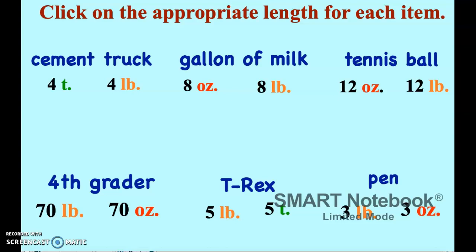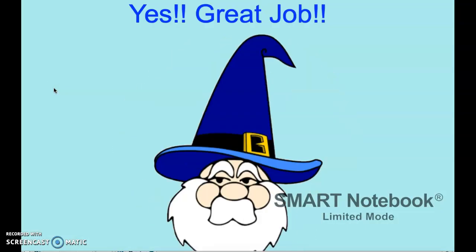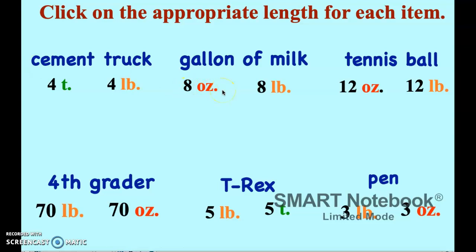Now there's a typo at the top — the directions say 'length' but it should say 'weight.' The cement truck — four pounds would only be four loaves of bread, definitely not, so four tons. A gallon of milk — eight ounces is hardly anything, so eight pounds is the answer. And a tennis ball doesn't weigh very much — twelve pounds is way too much, so twelve ounces, which would be like twelve slices of bread.